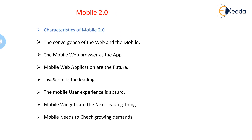The convergence of the web and mobile was about integrating types of digital mobile devices. The mobile web browser is now the app — whatever app we currently use, we use it as a mobile web browser. Mobile web applications are the future of computing. JavaScript is the leading language we use to write these applications. Mobile widgets are the next leading thing, and mobile computing demand is growing enormously — every person today has mobile access.